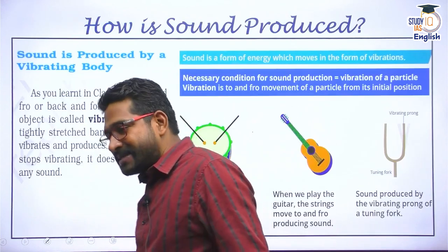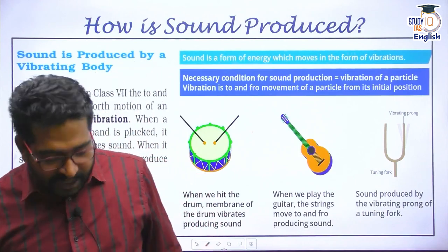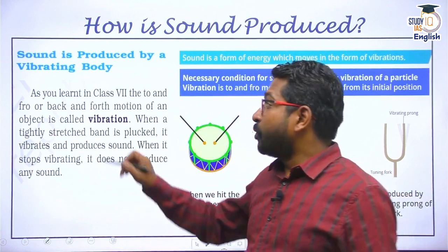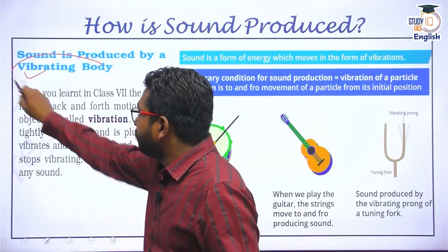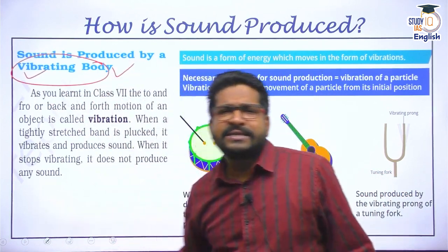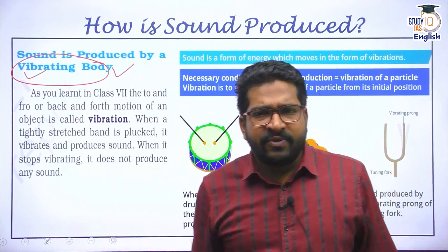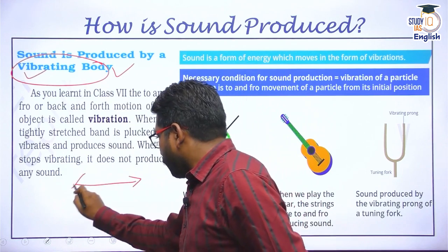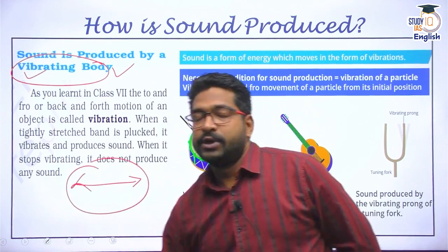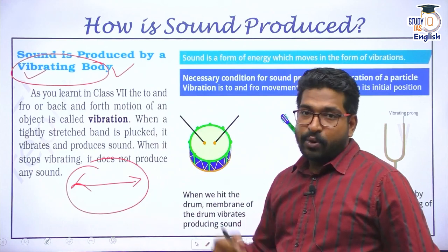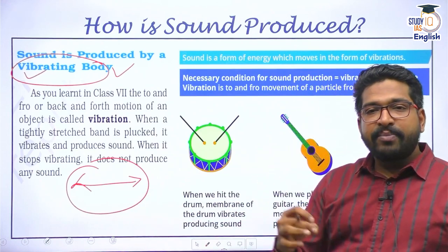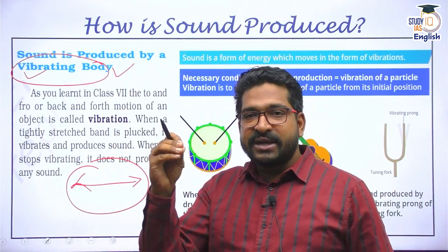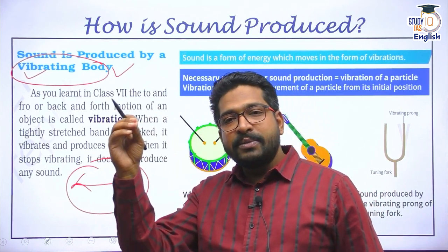What is sound and how is it produced? Sound is always produced by a vibrating body — that is very important to remember. Vibration is a to-and-fro motion. Sound is nothing but a form of energy that moves as vibration. A vibrating material transfers energy to neighboring atoms or molecules. So sound is basically a form of energy which moves in the form of vibration.